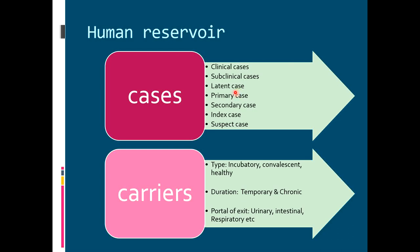Latent cases are cases in which the infectious agent is present in a dormant phase in the body, and whenever favorable circumstances arise it becomes active and produces signs and symptoms. Examples of latent infection include herpes simplex, latent tuberculosis, and herpes zoster caused by reactivation of the varicella-zoster virus.